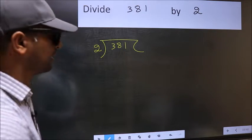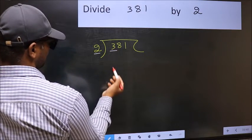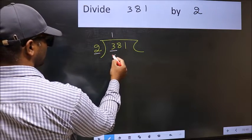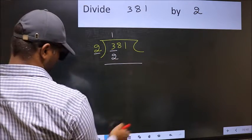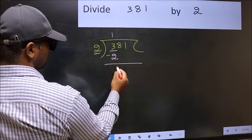Next, here we have 3 and here 2. A number close to 3 in 2 table is 2 1s, 2. Now you should subtract. 3 minus 2, 1.